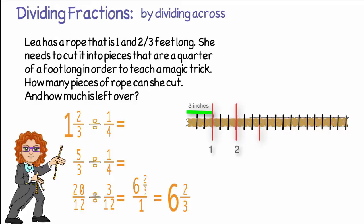If we make a cut in the rope every three inches, we will end up with six pieces of rope that could be used for the magic trick and a short, unusable piece that is only two inches long or two thirds of the needed length.